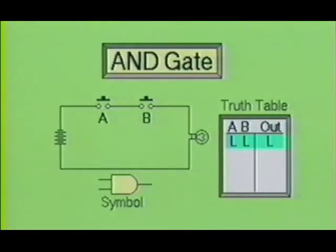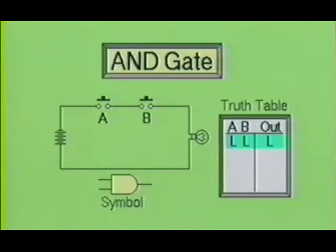Now let's examine this circuit and see how it works. As you may have already noticed, when neither switch is pressed, the lamp will not be on. At this point, we could say switch A is low, switch B is low, and the output is low. This has been illustrated on our truth table, which shows a low on A and a low on B will produce a low at the output.